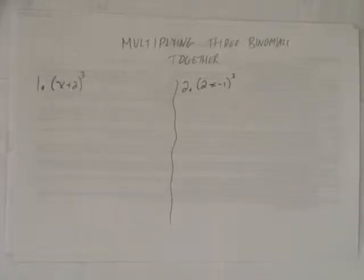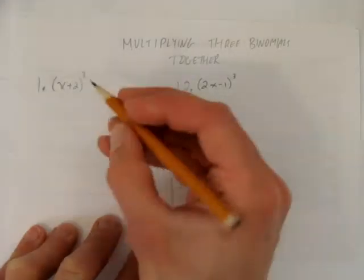In this video, we'll look at how to multiply three binomials together. So the first binomial we see is x plus 2 cubed.